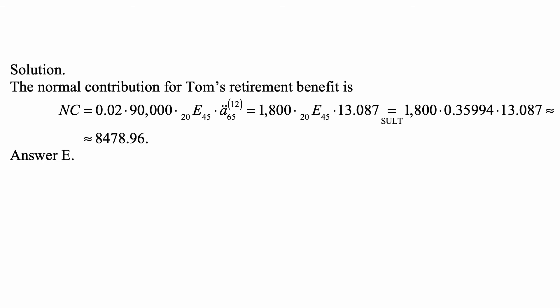So the normal contribution, or normal cost as it's commonly called, is equal to 0.02 times $90,000 — that is, 2% of the current salary. But because it's paid at age 65, that's 20 years into the future, so we apply the pure endowment factor to calculate its present value: times Ä̈₆₅⁽¹²⁾, because this amount will be paid as a monthly retirement benefit. This is the annual accrual that will be split into monthly payments. So 0.02 times 90,000 is 1,800, giving us 1,800 × ₂₀E₄₅ × 13.0870.